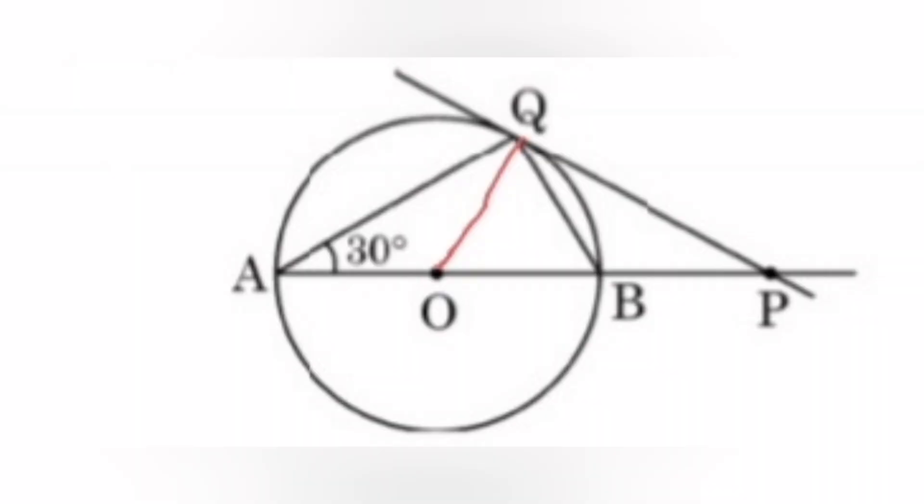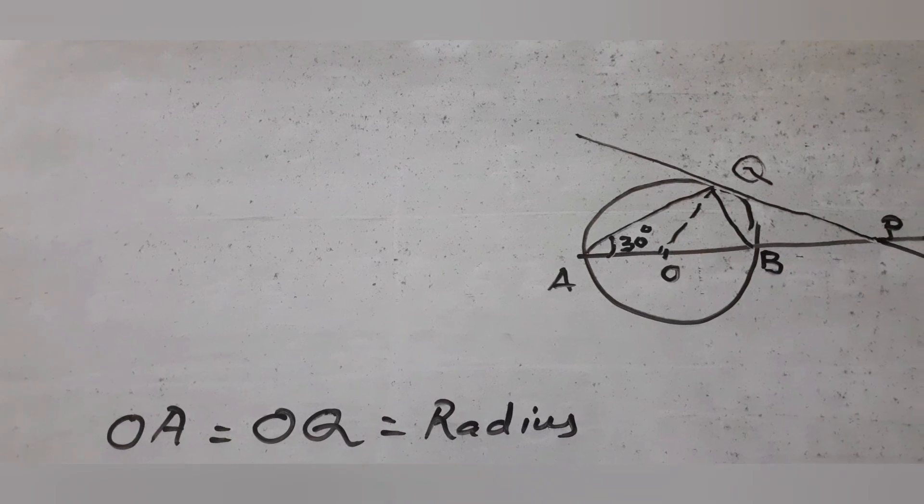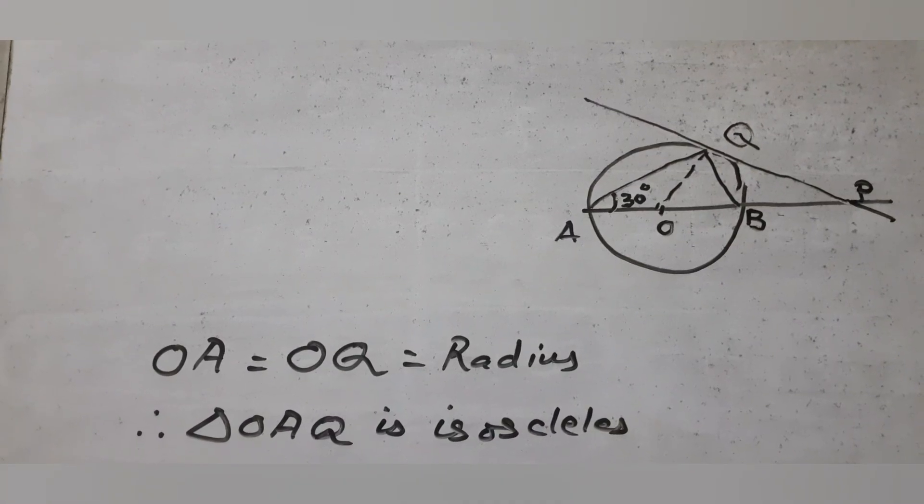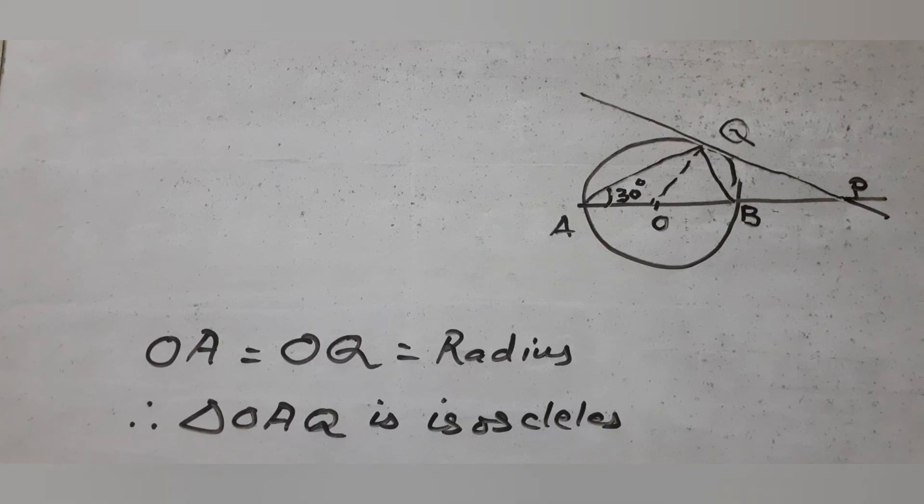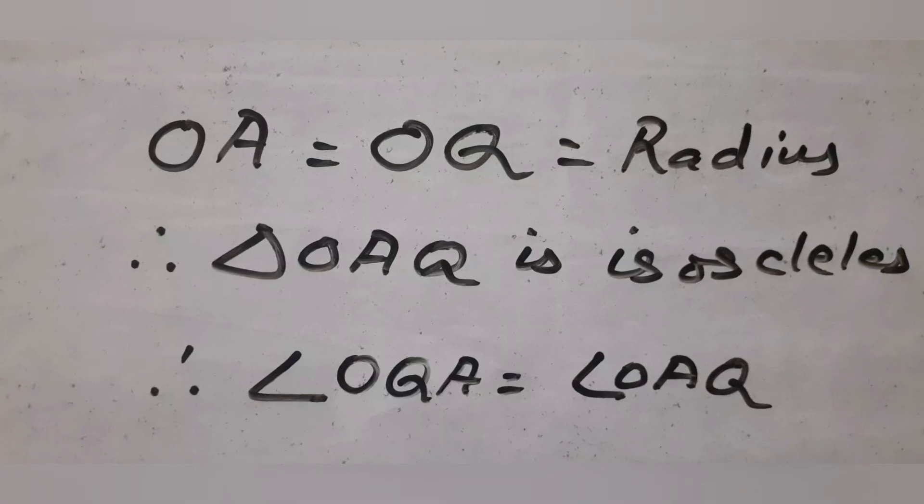Join OQ. OQ is a radius, so OA equal to OQ. So triangle OAQ is isosceles and angle OQA equal to angle OAQ equal to 30 degrees which is given.